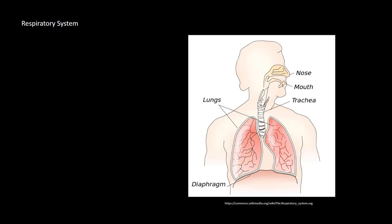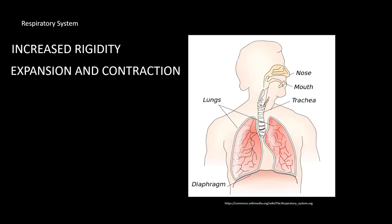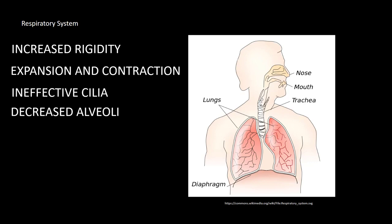In terms of the chest itself, the ribs and tissues within the lungs become more rigid, making it difficult for them to expand and contract as they did when younger. The cilia become less effective in removing mucus and bacteria from the lungs. Older adults also experience a decrease in the total number of alveoli within the lungs themselves.